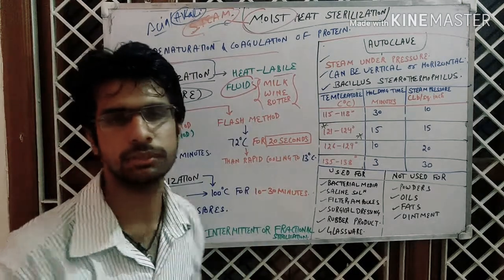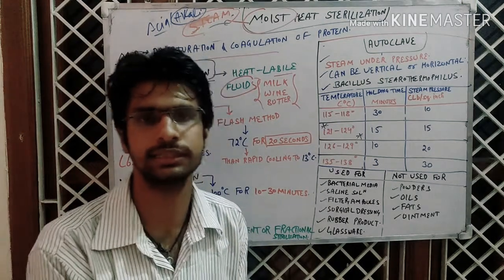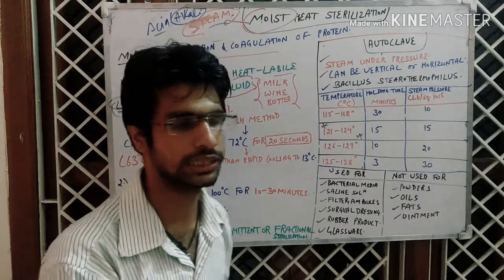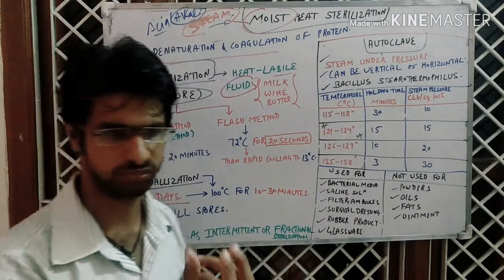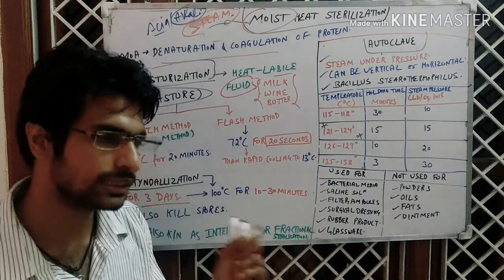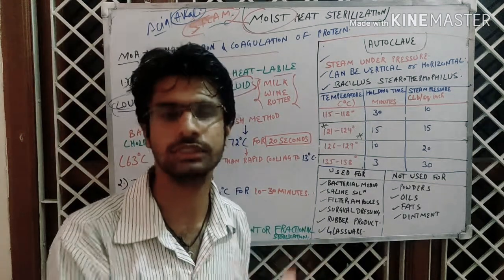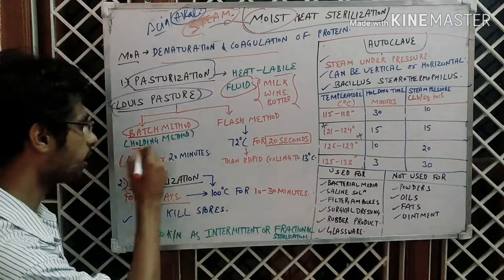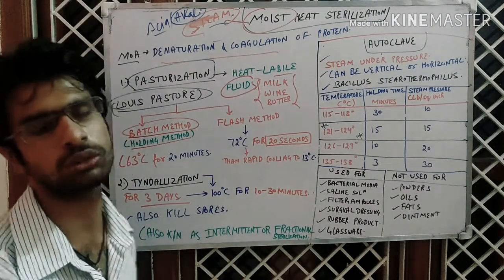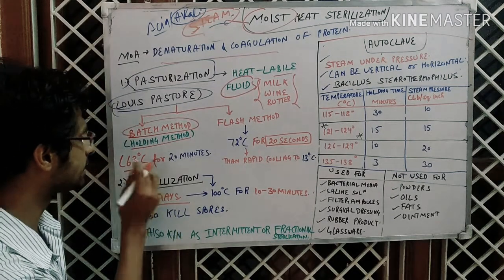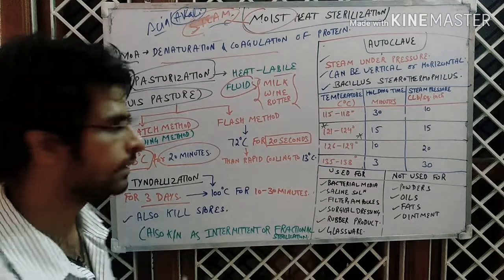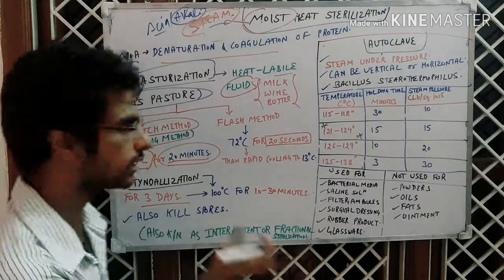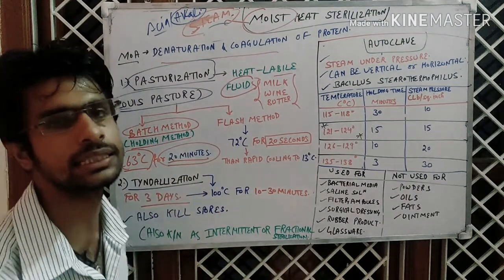There are two methods in the pasteurization technique. When you buy a pack of milk you always see 'pasteurized milk' written on it. The first method is the batch method, also known as the holding method — 'holding' because you have to hold the fluid at that temperature. In the batch method it is 63 degrees Celsius for 20 minutes.